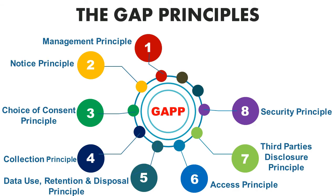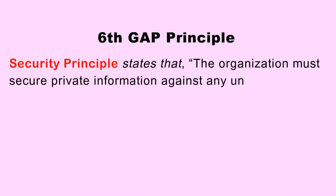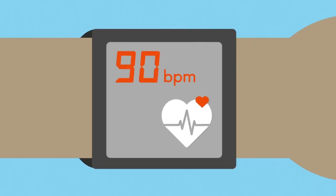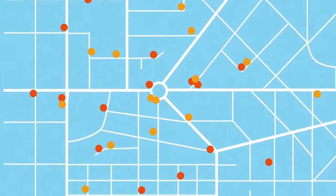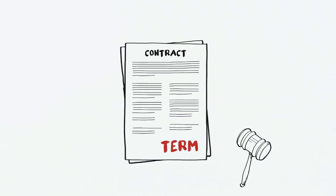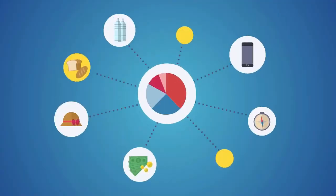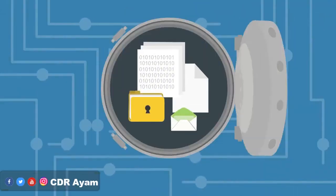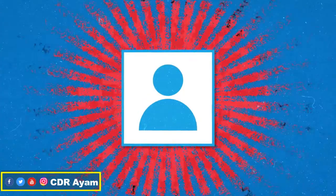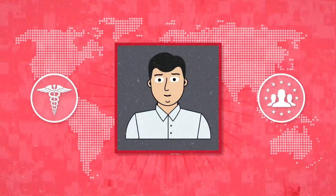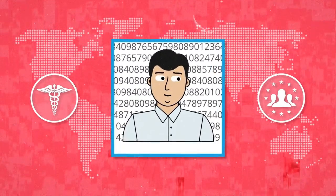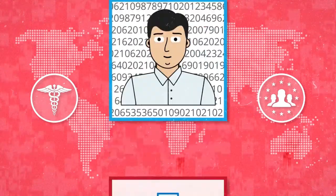The eighth GAPP principle is the Security principle, which states that all organizations must secure all guarded digital private information against any unauthorized access. Based on this principle, if your private digital information is leaked or sold online, you have the absolute right to sue the organization you entrusted it with, since securing your digital private information is their core mandate. It is highly recommended to only trust organizations that have no bad record of allowing client information to be leaked online.